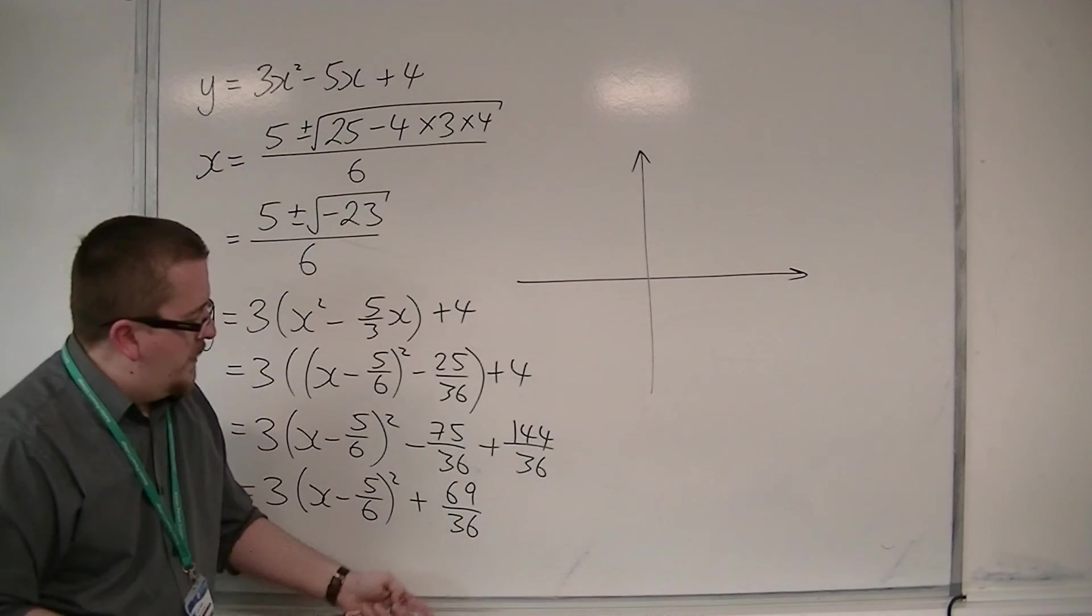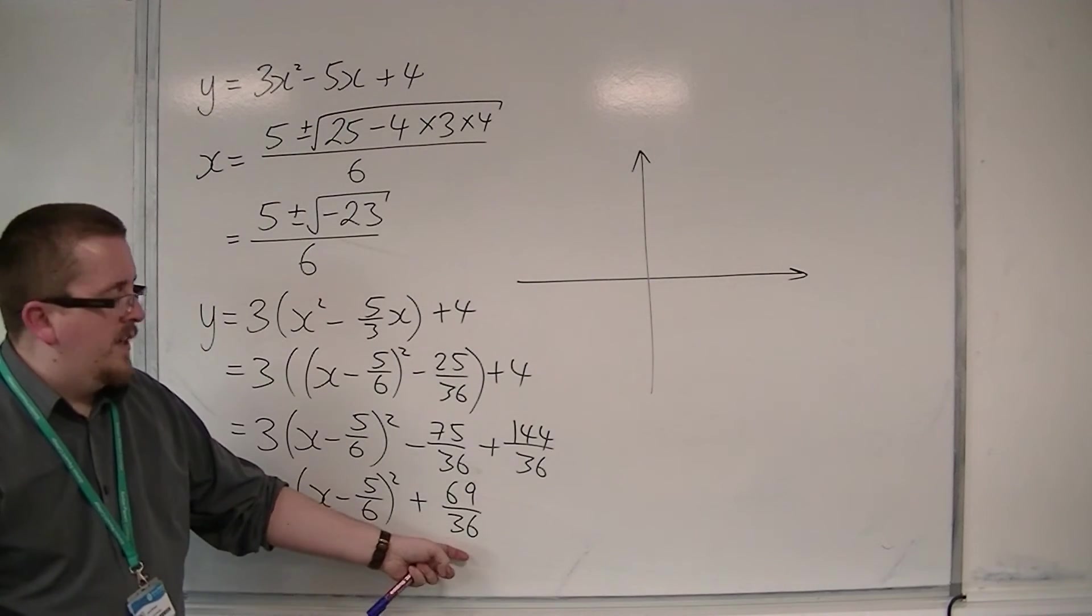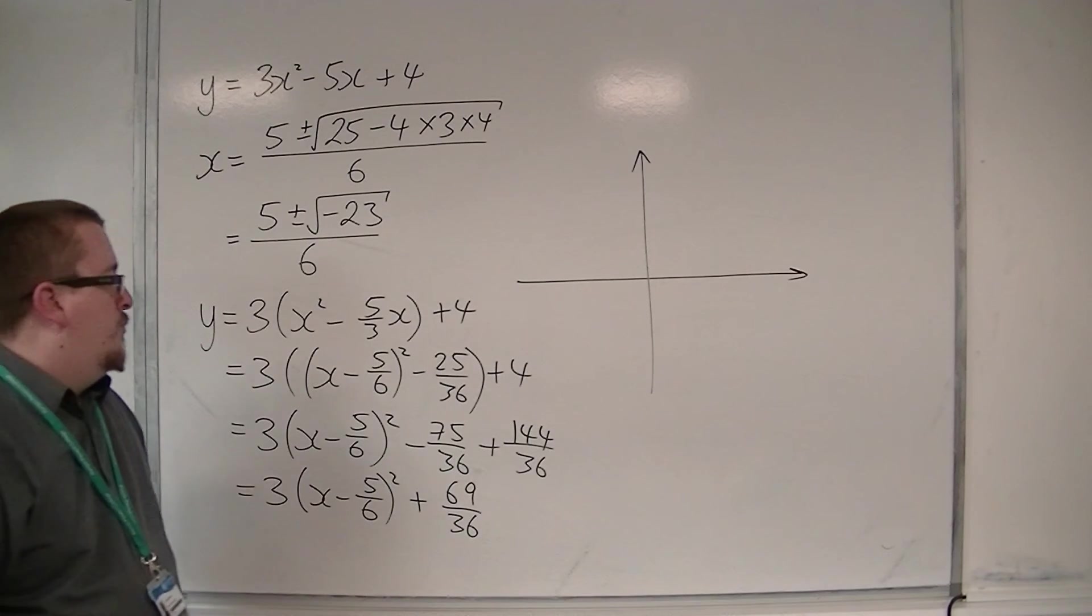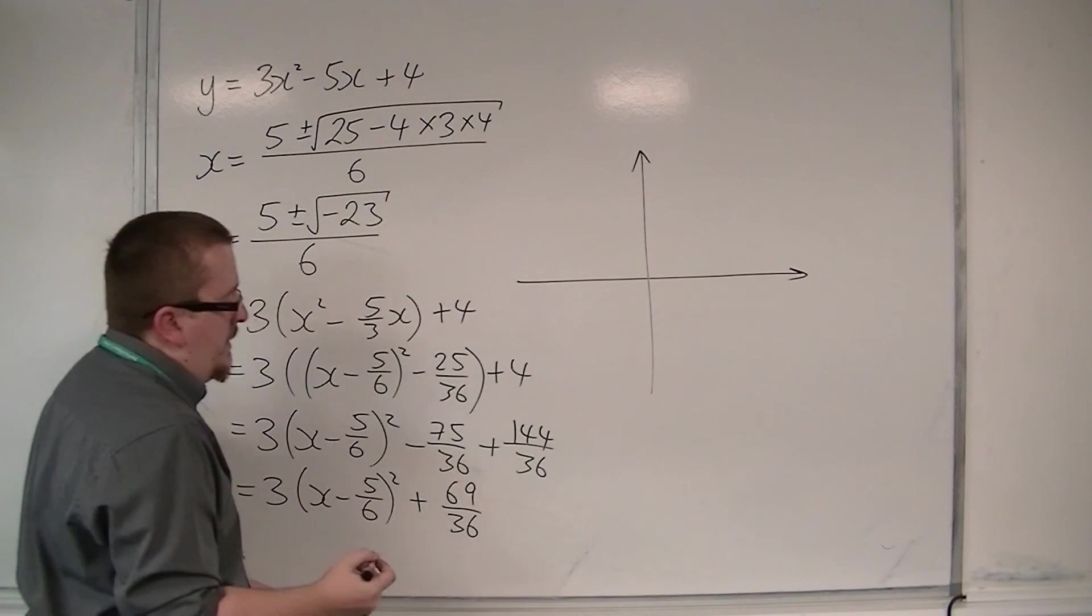So 69 over 36, that's right. And then that can be simplified down, divide through by 3, so we're going to have 23 over 12.